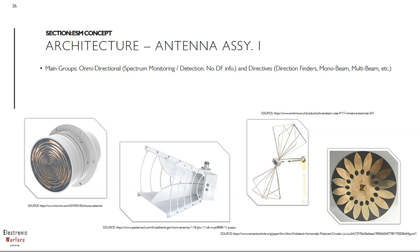Omni antennas are also assembled in circular arrays of five up to nine elements, typically for phase-based direction finding — I will show some pictures of these arrays later. And finally, one of my favorites: a multi-beam Vivaldi antenna. Each Vivaldi is fed with an RF input, creating several beams to cover 360 degrees around the platform. Direction finding is then performed based on amplitude comparison, also called the monopulse technique.